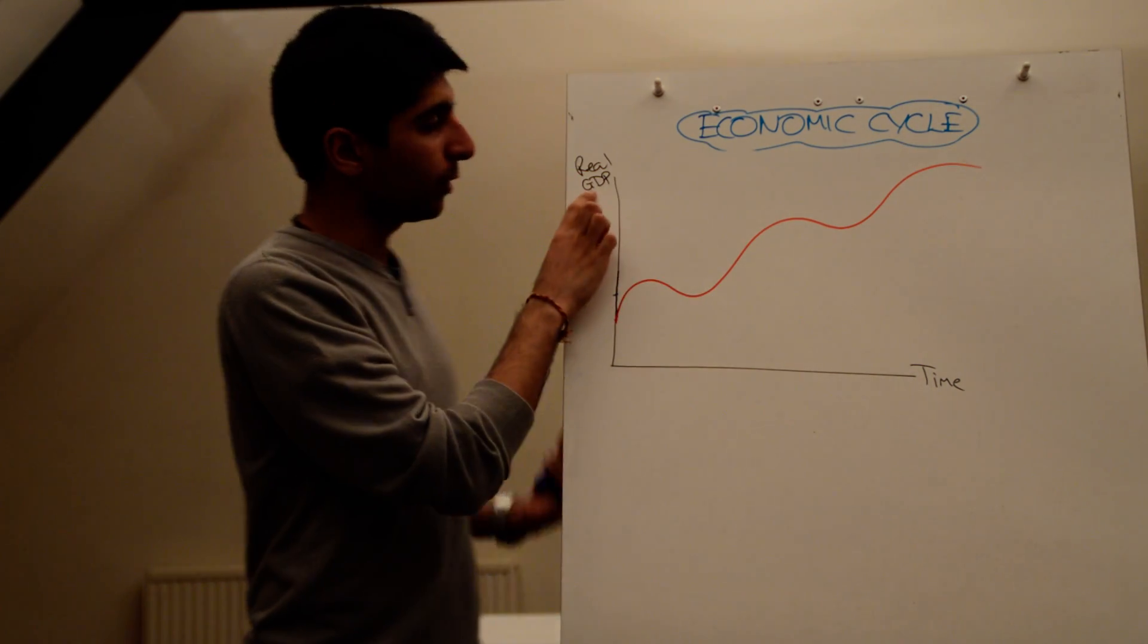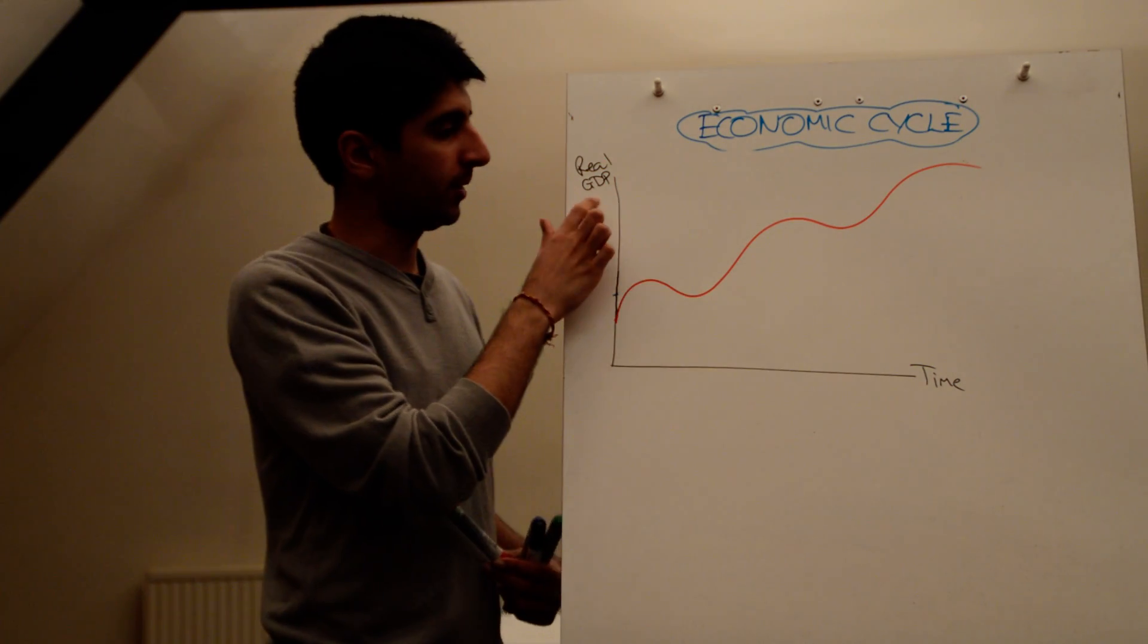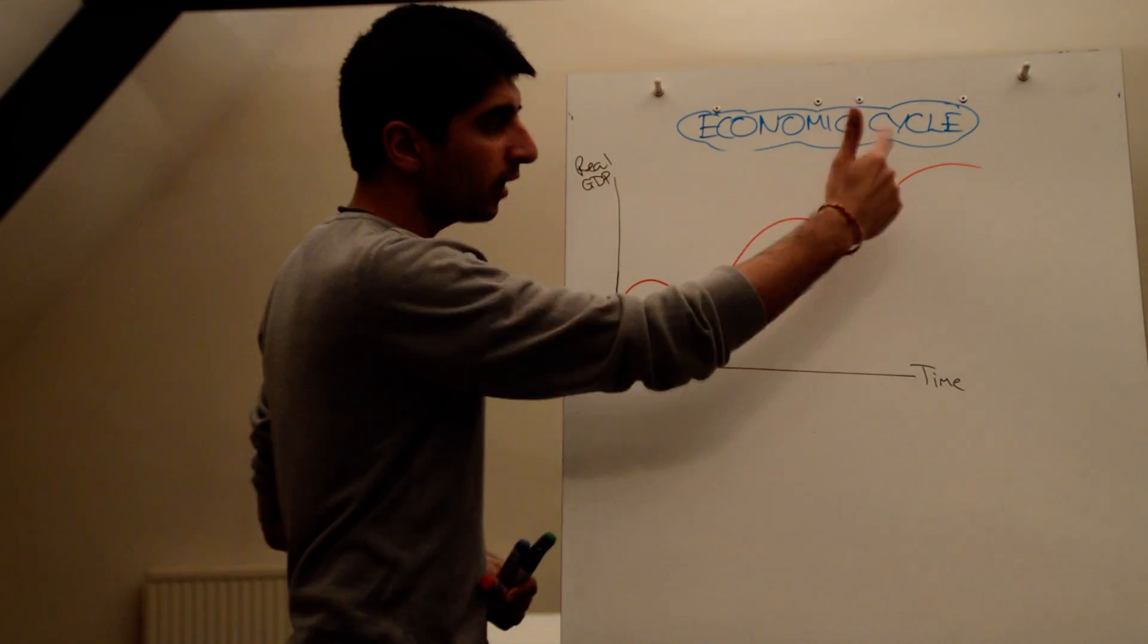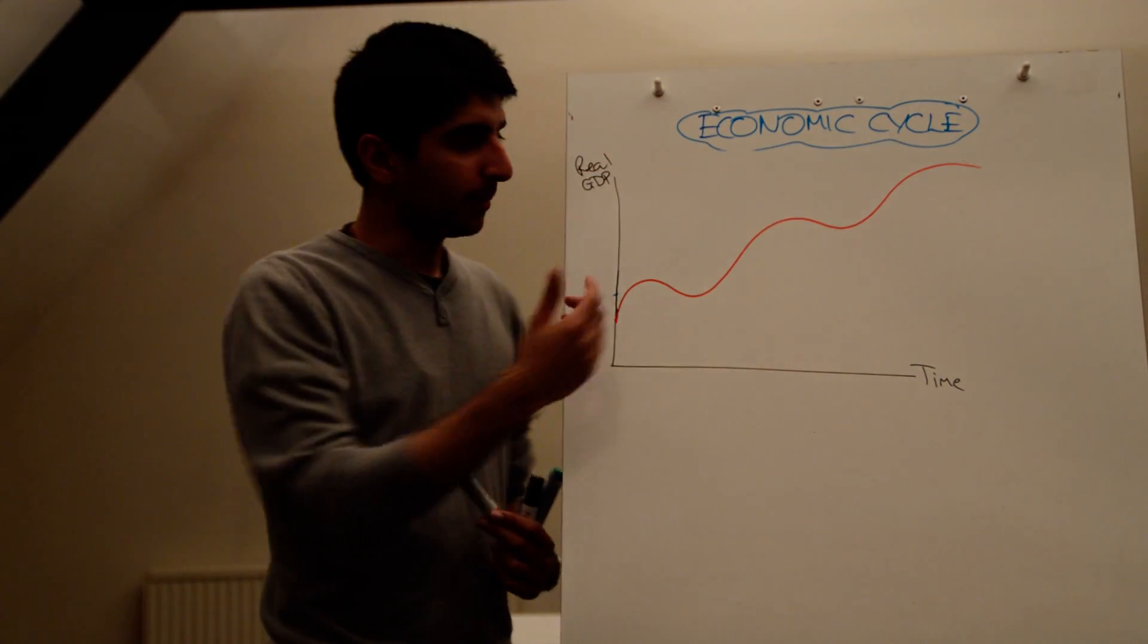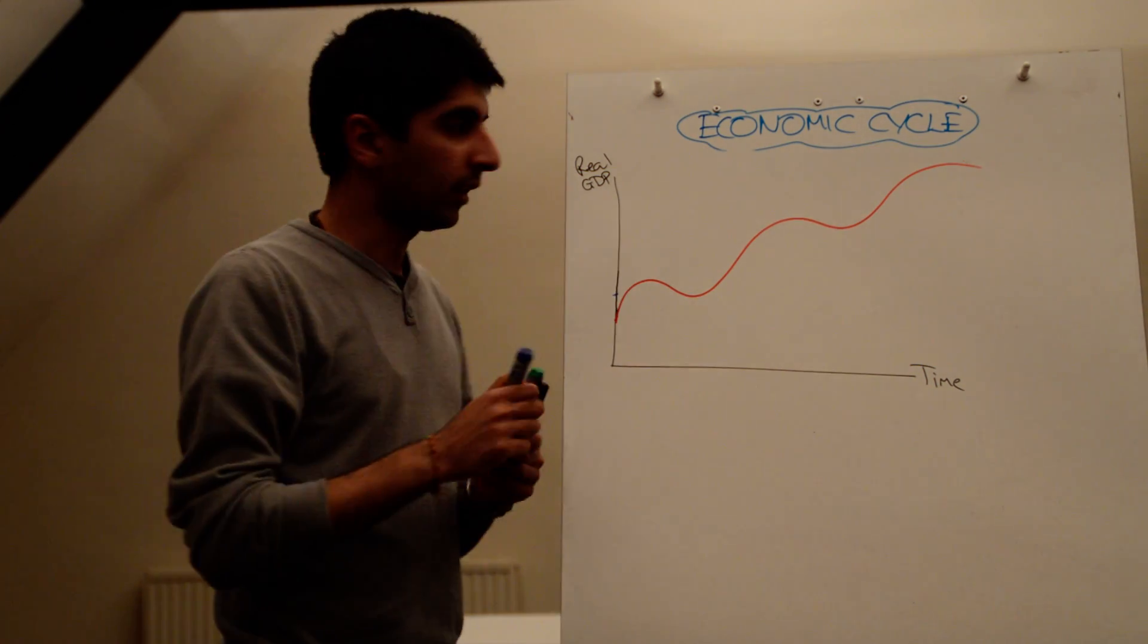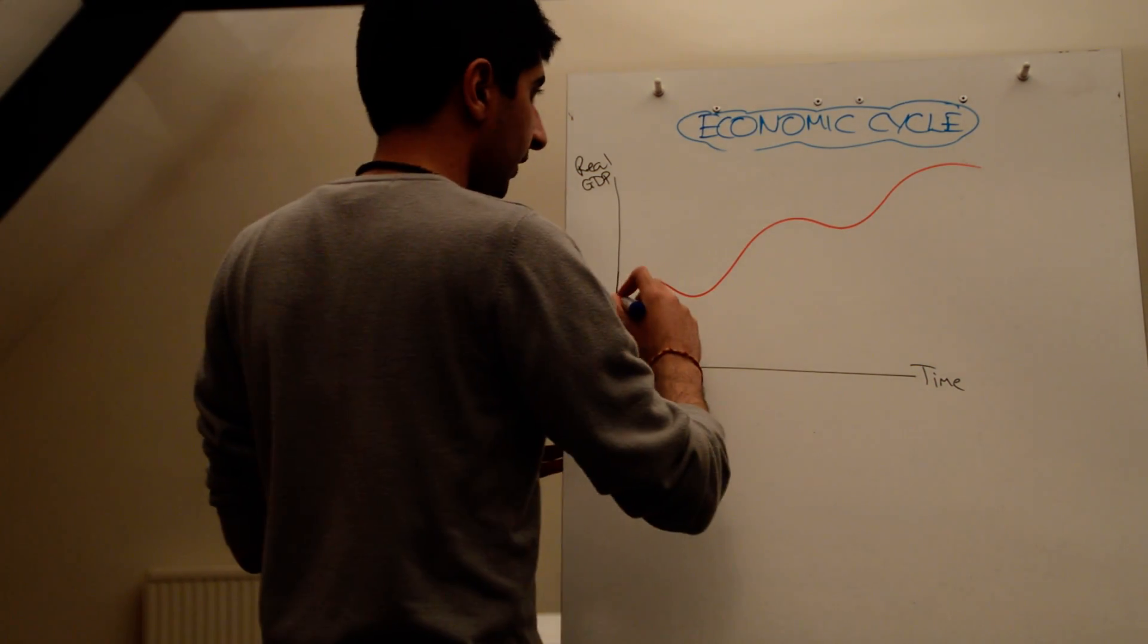So on the axis here we've got real GDP, we've got time. So just flipping real GDP down the y-axis. You can see over time, yeah, real GDP is increasing. They're not settling. And when we try and average out what this line looks like, we get something like this, don't we?